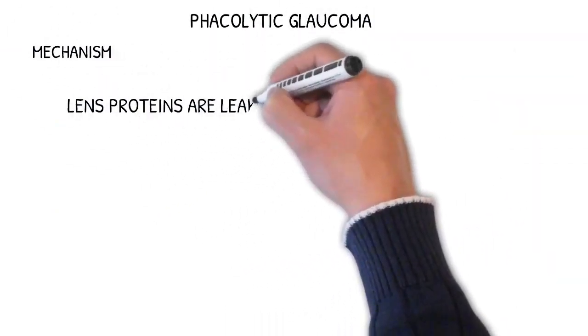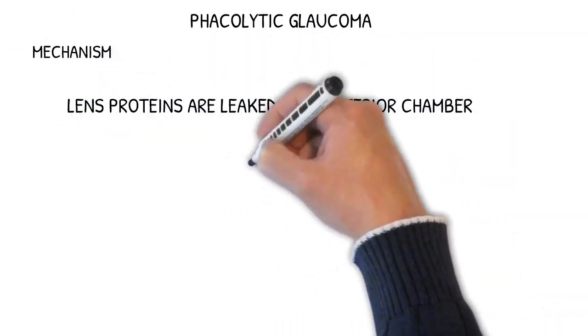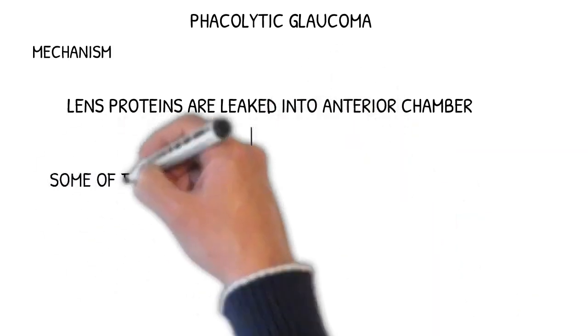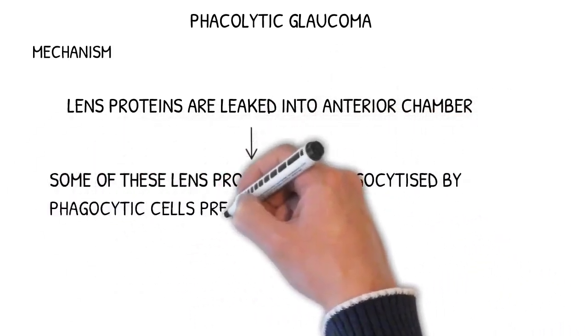Phacolytic glaucoma: lens proteins are leaked into anterior chamber. Some of these lens proteins are phagocytized by phagocytic cells present in anterior chamber.